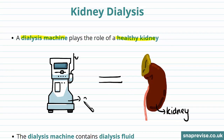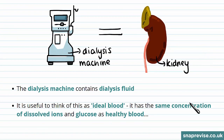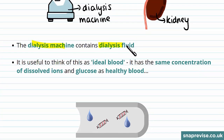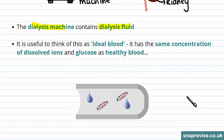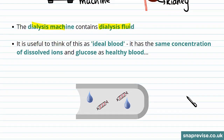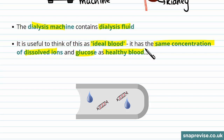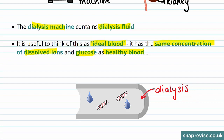This is what a dialysis machine looks like. The dialysis machine contains dialysis fluid. It's useful to think of this as ideal blood — it has the same concentration of dissolved ions and glucose as healthy blood. So dialysis fluid has the ideal concentration of sugar, glucose, and other ions needed in the body.